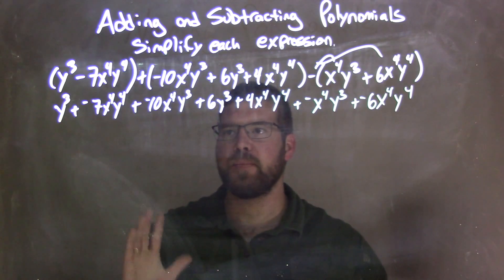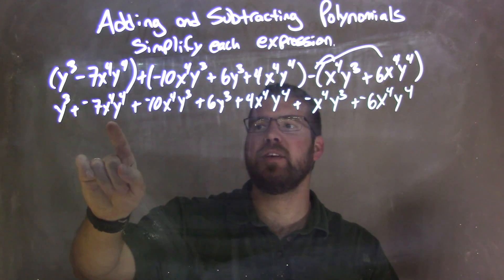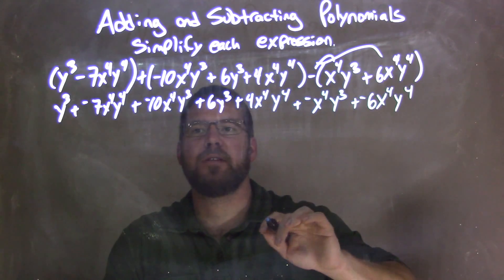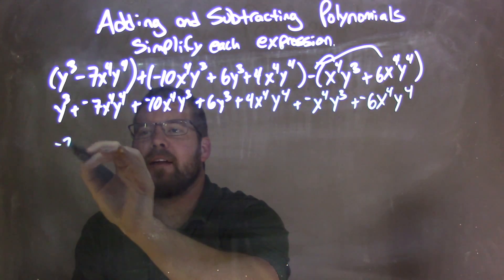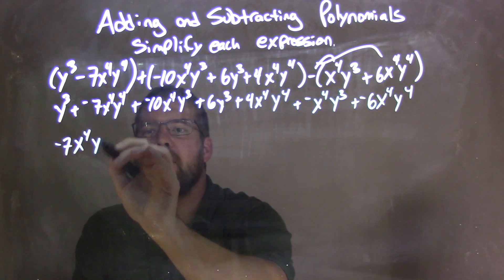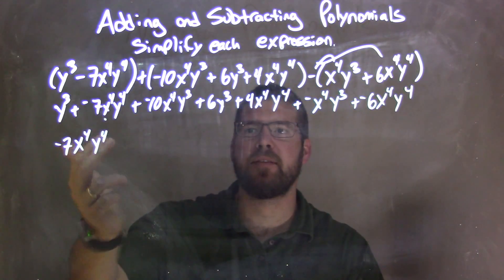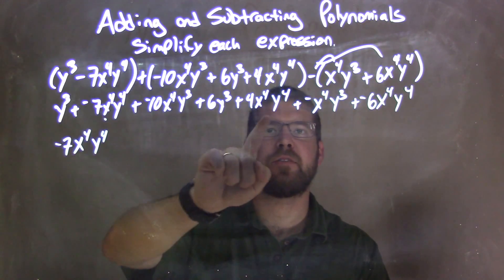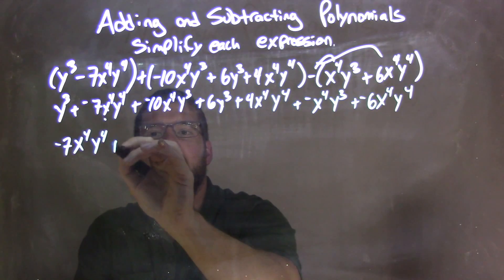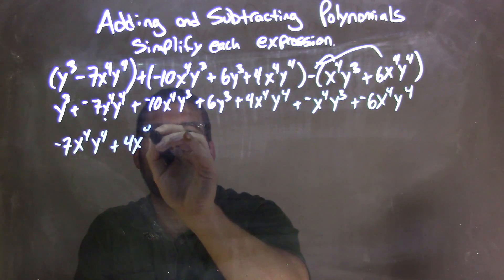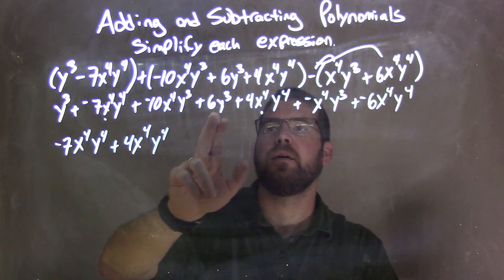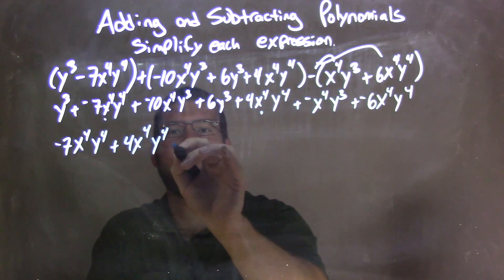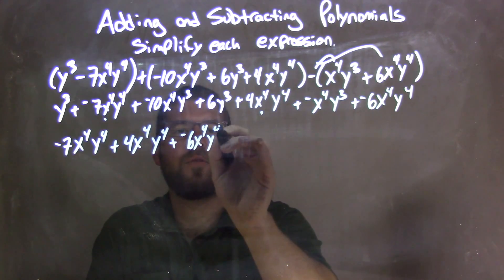So now I'm going to put my like terms together, in the highest degree first. I see x to the fourth y to the fourth a few times — that is my highest combination of degrees. So I'll write the negative 7x to the fourth y to the fourth here first, putting a dot underneath it showing that I brought it down. That one's to the fourth power, x to the fourth y to the fourth. So we have 4x to the fourth y to the fourth right there. Negative 6x to the fourth y to the fourth — so we have plus a negative 6x to the fourth y to the fourth right there.